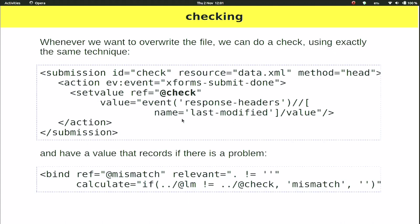When you want to overwrite the file, do a check that the last-modified value of the file is still the same. We do a HEAD on it, set the check value to the last-modified value, and then we can have a value 'mismatch' in the instance that's only relevant when the last-modified doesn't equal the check value. If it doesn't equal it, set mismatch to the word 'mismatch' and make it only relevant when non-empty. If they do match, set it to empty — everything's okay. This reuses the relevance technique for error messages that we used earlier.